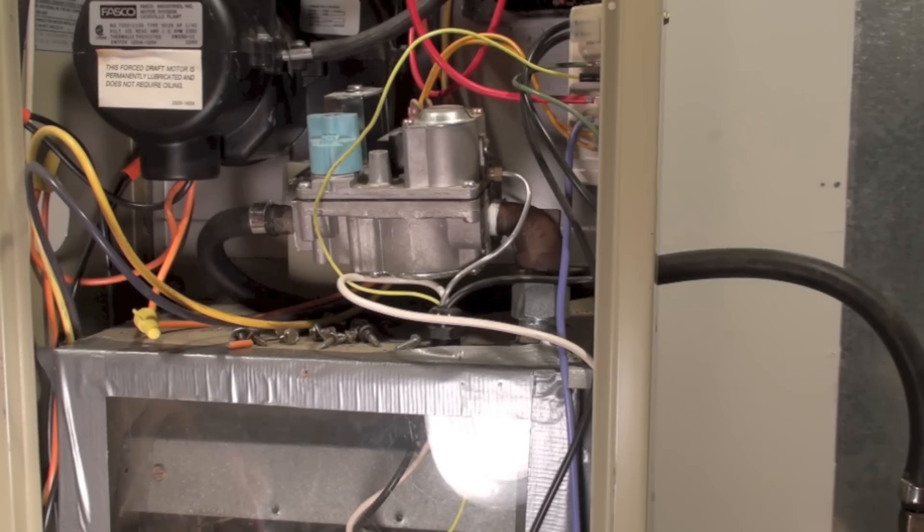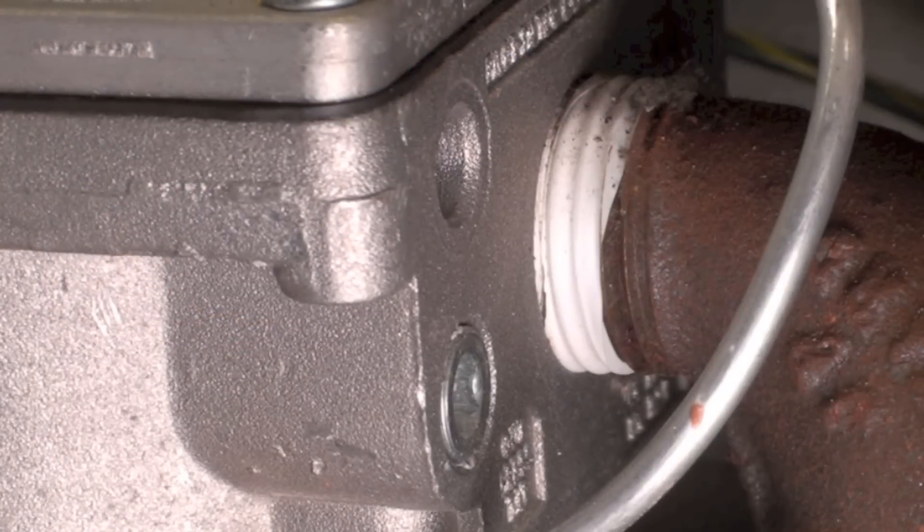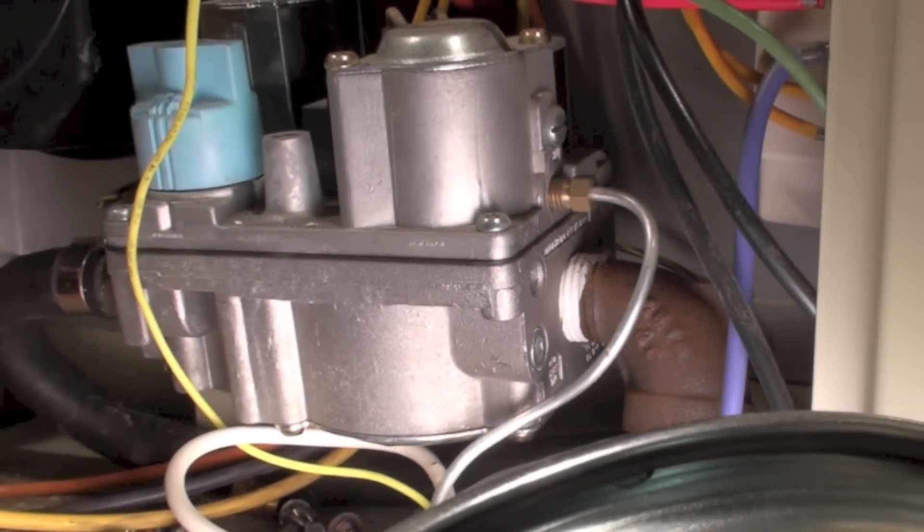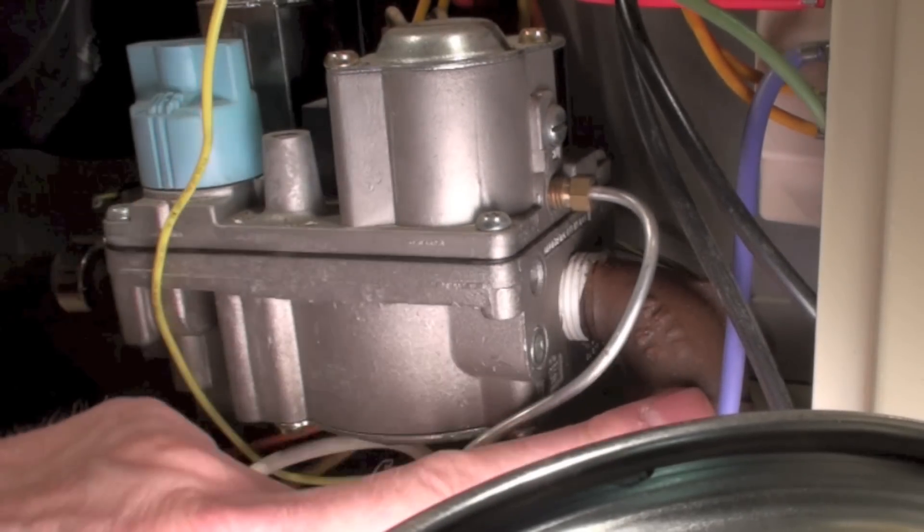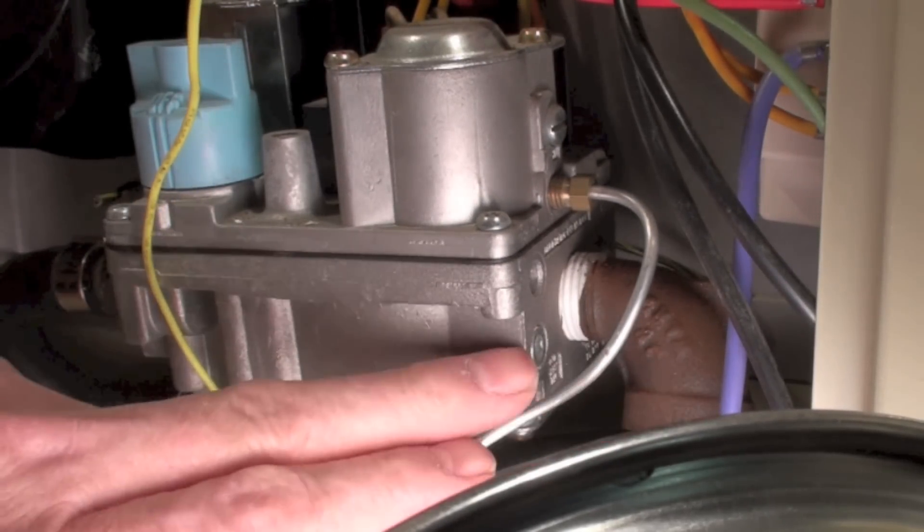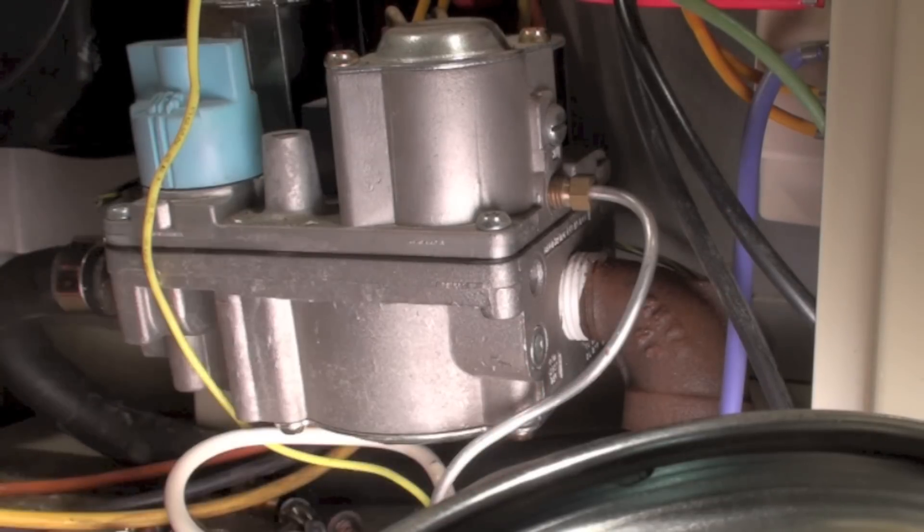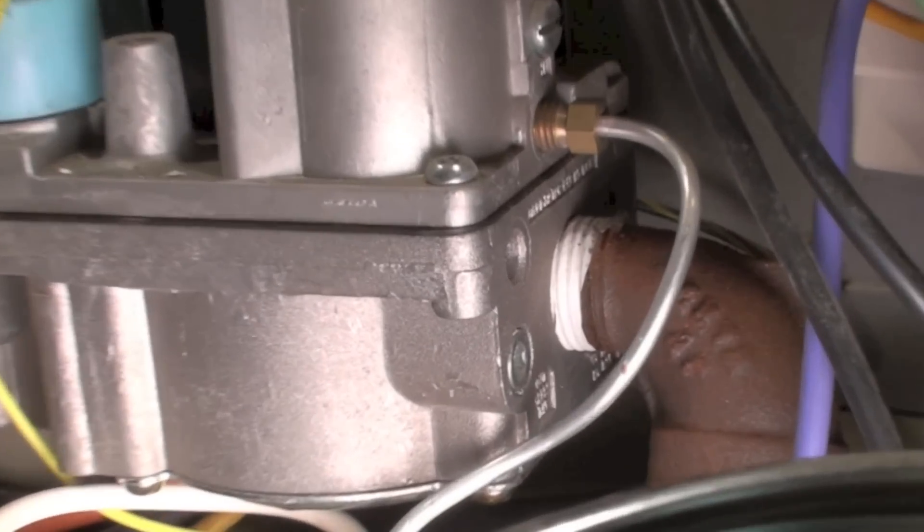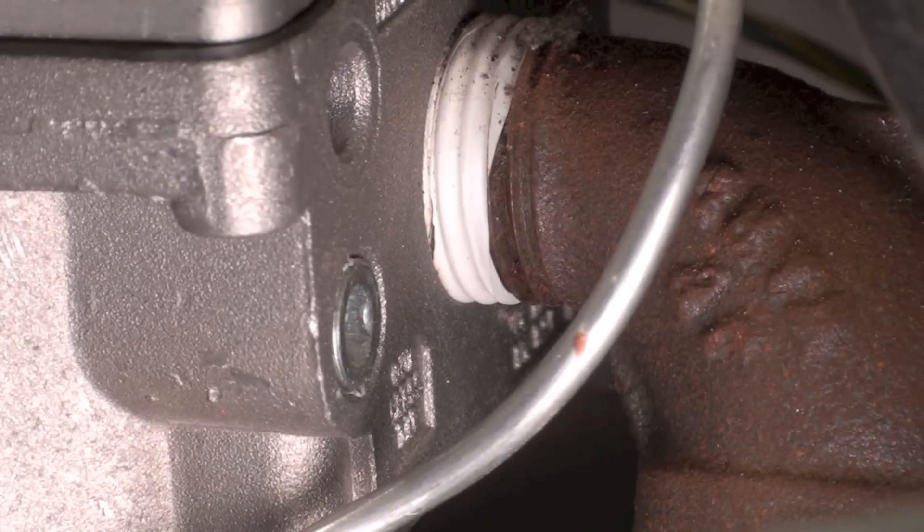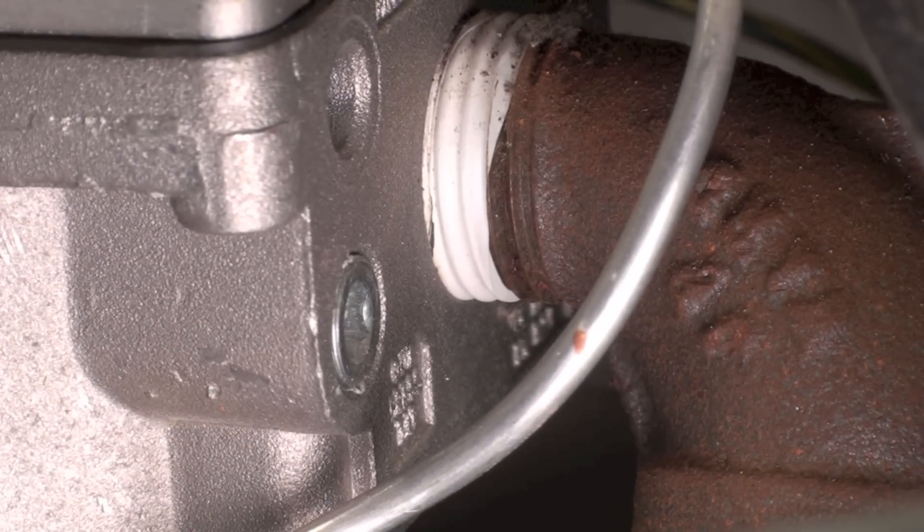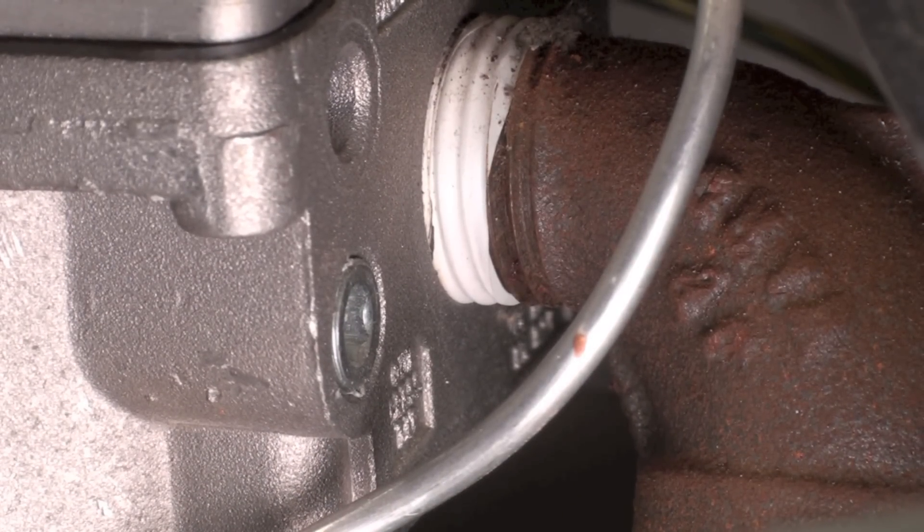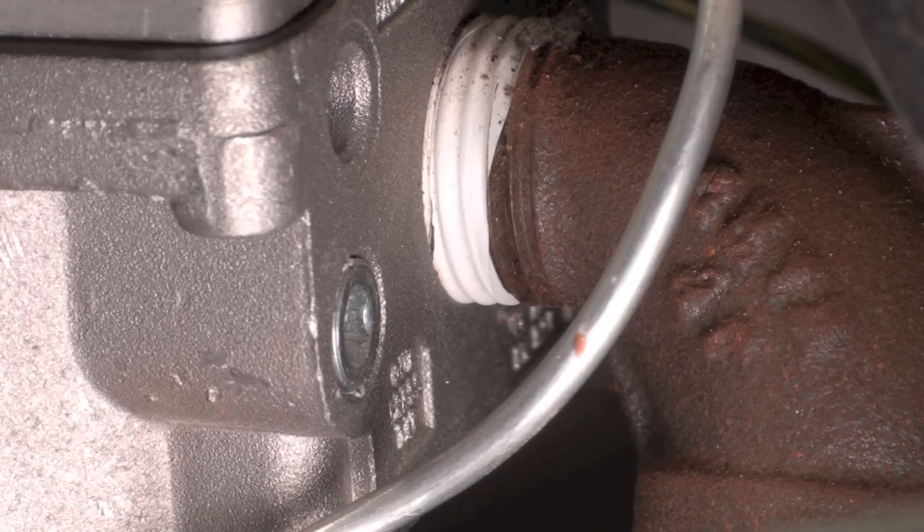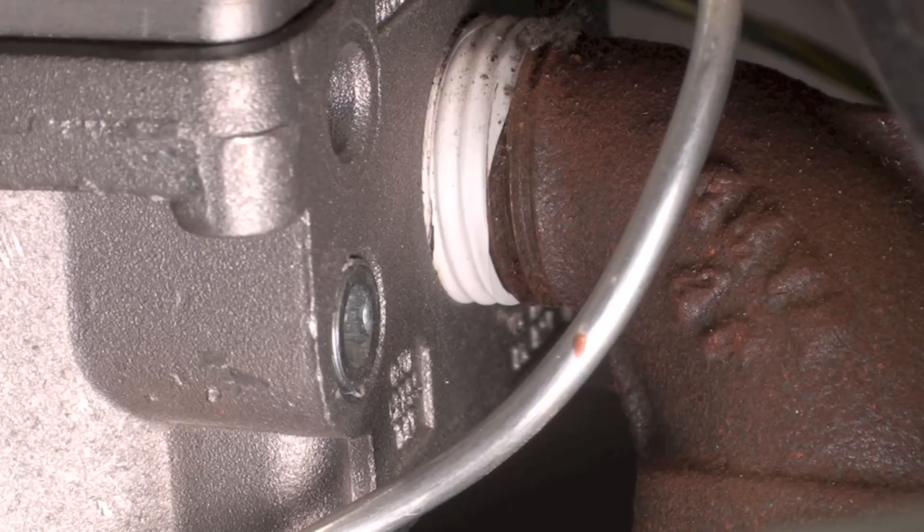Okay, here's the output of the valve. The tap's right here, it's fairly standard. First thing is shut down the furnace, turn off the gas cock, and we'll hook our tap onto there so we can get a manifold pressure.